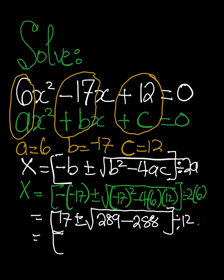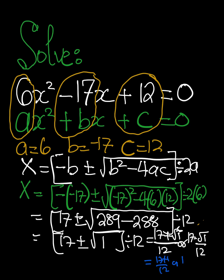And then we're going to have 17 plus or minus square root of 1 divided by 12. We know that that's going to give us 17 plus 1 over 12, or 17 minus 1 over 12. That means this one here is going to be 18 over 12, or 16 over 12. And then we're going to reduce it from there.